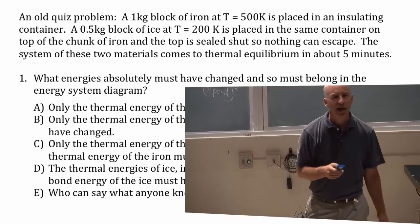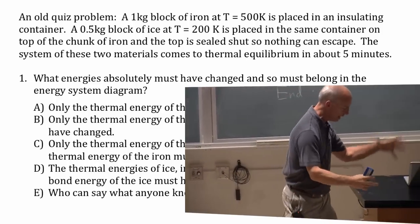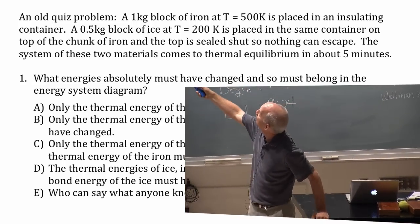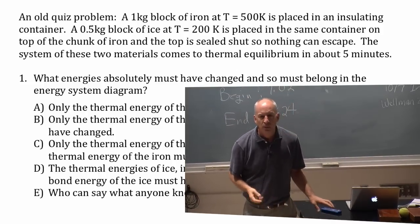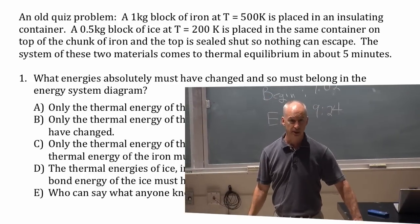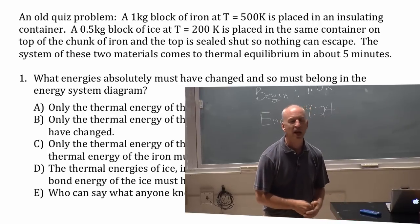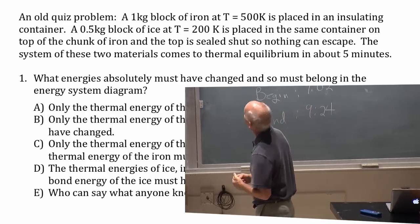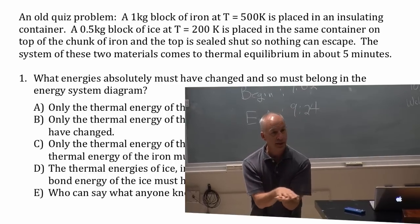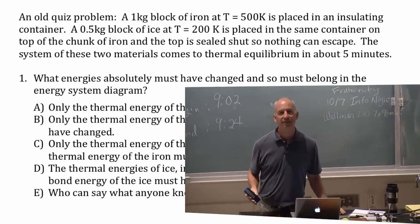So, one kilogram block of iron, a hot block of iron, 500 kelvin, place it in an insulating container. So I have a container, I put a hot block of iron in there, on top of that I put a really cold block of ice, half kilogram block of ice, really cold ice. So, 200 kelvin is somewhat colder than the ice that you take out of your freezer. It's certainly well below zero C. Zero C is 273 kelvin. So, 200 kelvin is a really cold chunk of ice. The top is sealed shut so that nothing can escape. Those two things sitting on top of each other are in what's called thermal contact, so they can exchange heat. You probably know that. They come to thermal equilibrium in about five minutes. Thermal equilibrium just means they finally are at the same temperatures.